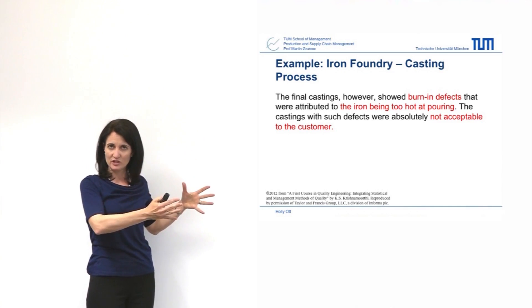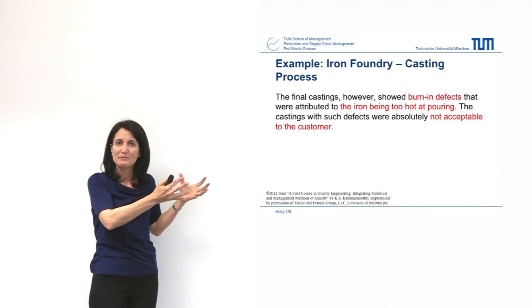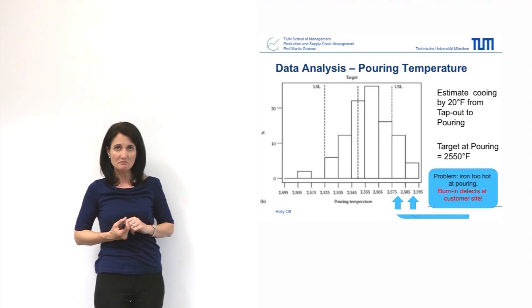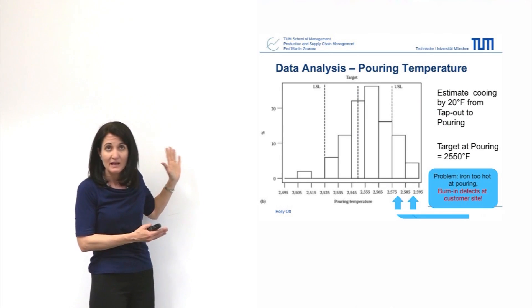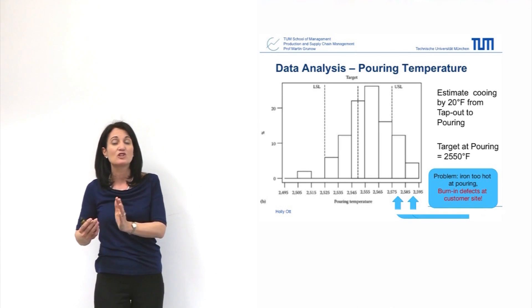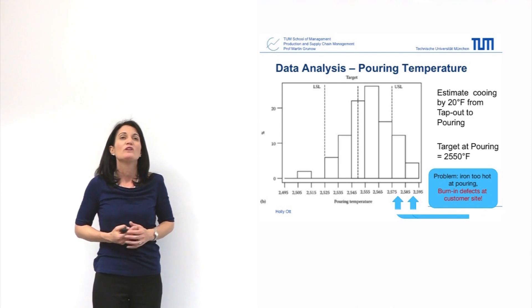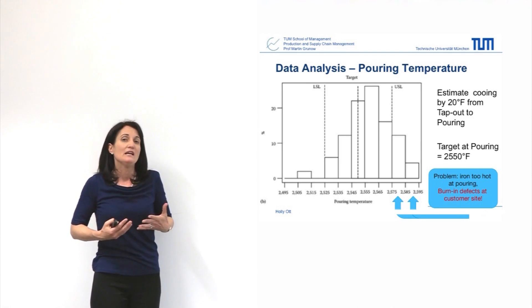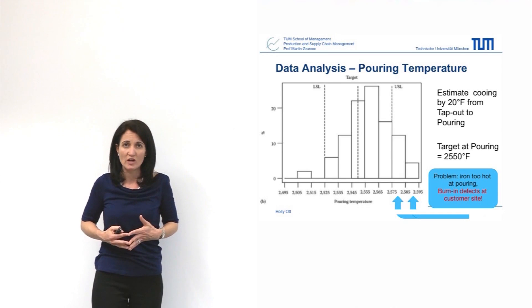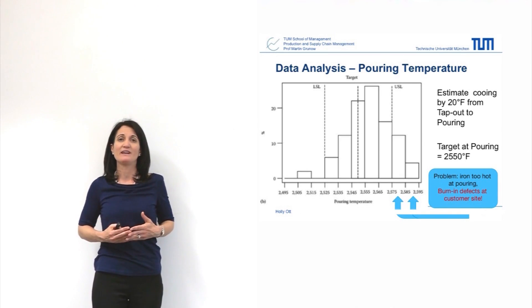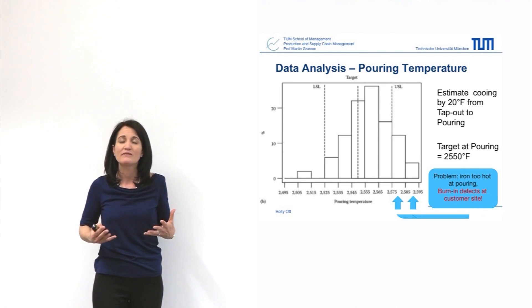You can measure the temperature where the molten iron is tapped out, and you can measure the temperature at which the molten iron is poured. Looking at the pouring temperature, here you see a histogram. What we've marked is the target temperature — 2,550 degrees Fahrenheit — and we estimate a coolant drop of 20 degrees before it gets to that point. You can also see on this graph an upper spec limit and a lower spec limit. Beyond the upper spec limit, the temperature is too hot. Above the upper spec limit, you get burn-in defects, and that amount of castings are not usable.